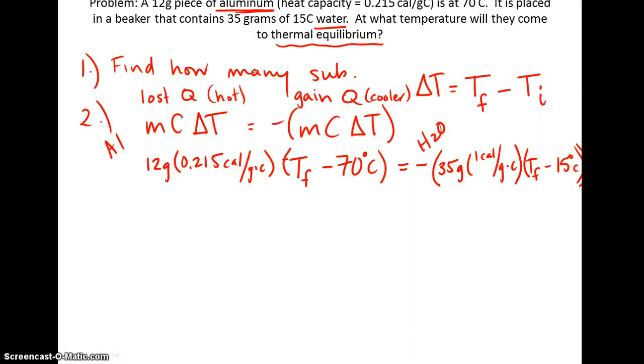If I do the actual multiplication, it works out that I multiply my numbers. So you have 2.58 Tf minus 70. I simply multiply these numbers together. Equals negative 35 Tf minus 15 degrees Celsius.